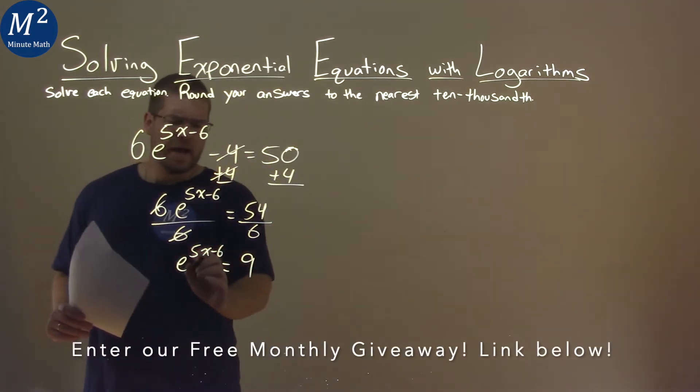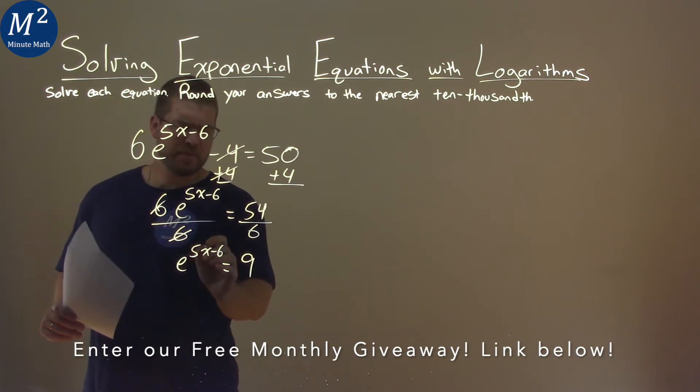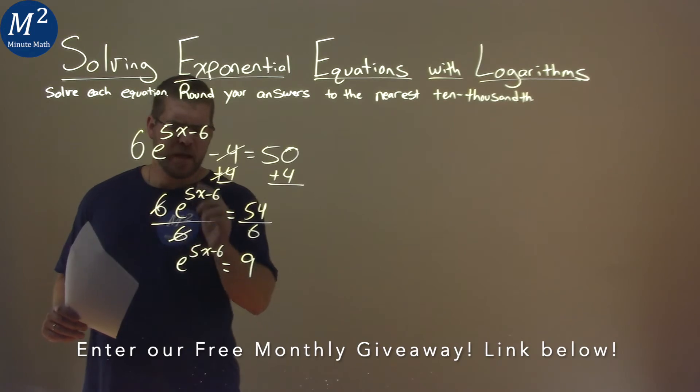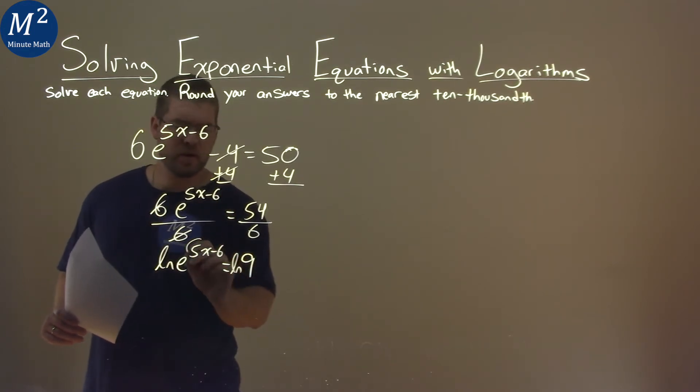From there, I want to get this 5x minus 6 down from the power. If I take the natural log of both sides of the equation, I can take this exponent and put it out front.